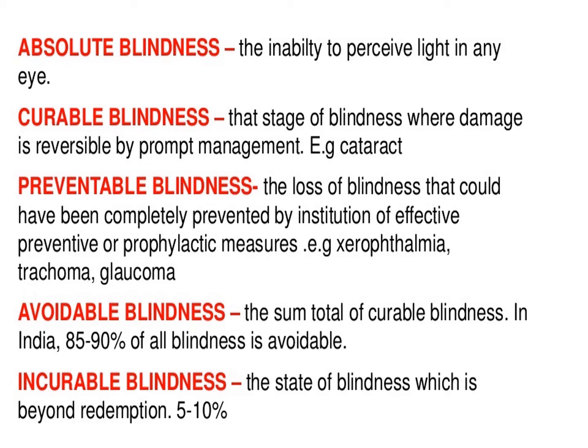Preventable Blindness: the loss of sight that could have been completely prevented by institution of effective preventive or prophylactic measures. Examples: xerophthalmia, trachoma, glaucoma. Avoidable Blindness: the sum total of curable blindness. In India, 85–90% of all blindness is avoidable. Incurable Blindness: the state of blindness which is beyond redemption, i.e. up to 5–10%.